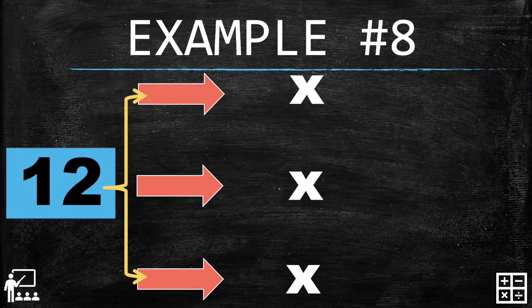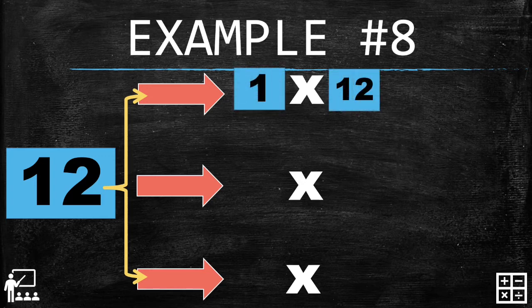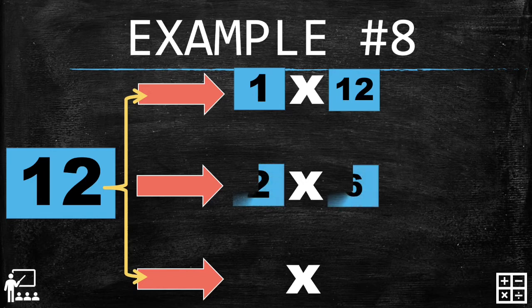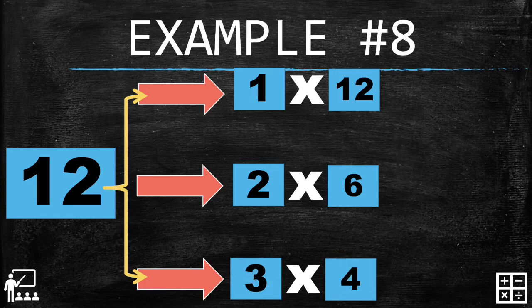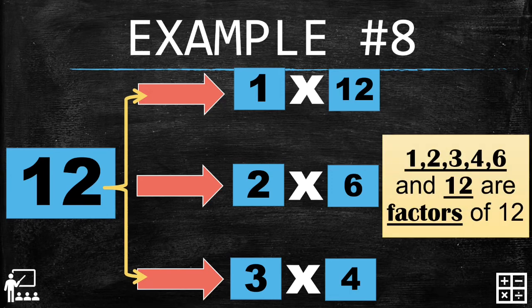Let's try more — example number eight. Two times six gives you twelve, and three times four gives you twelve. Can you guess the summary? One, two, three, four, six, and twelve are factors of twelve.